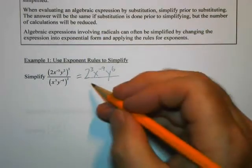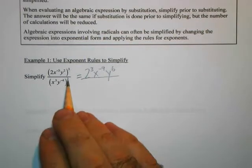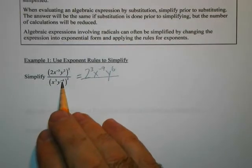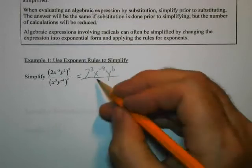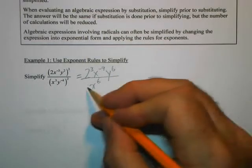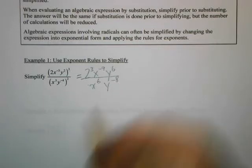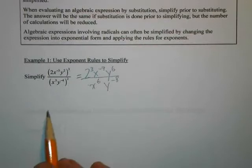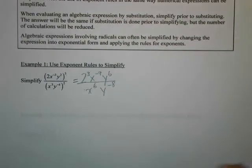We do the same on the bottom — apply the exponent 2 to both x cubed and y to the negative 4. Power of a power will multiply, so that's x to the 6 and y to the negative 8. So we've gotten rid of the brackets and the outside exponents. What should we do next?